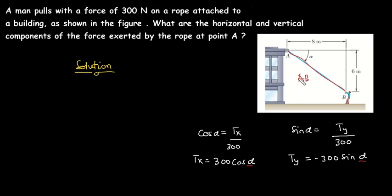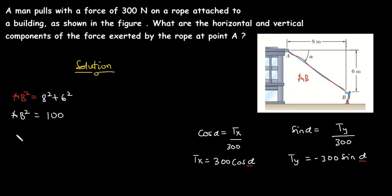For Method 1, we need to find the magnitude of line AB. Using the Pythagorean theorem: AB² = 8² + 6², so AB² = 64 + 36 = 100, and AB = √100 = 10. So line AB is 10 meters.